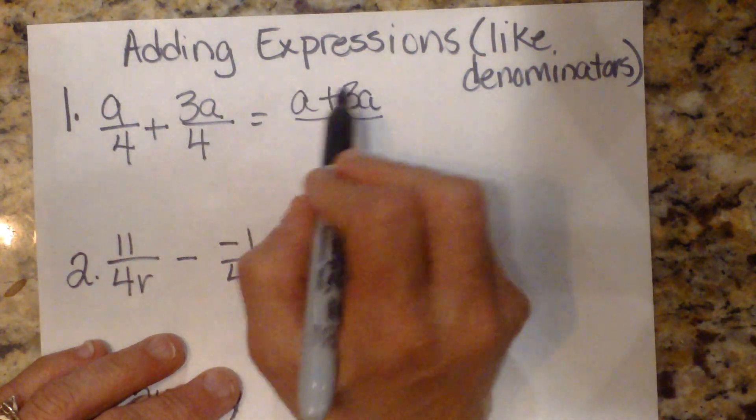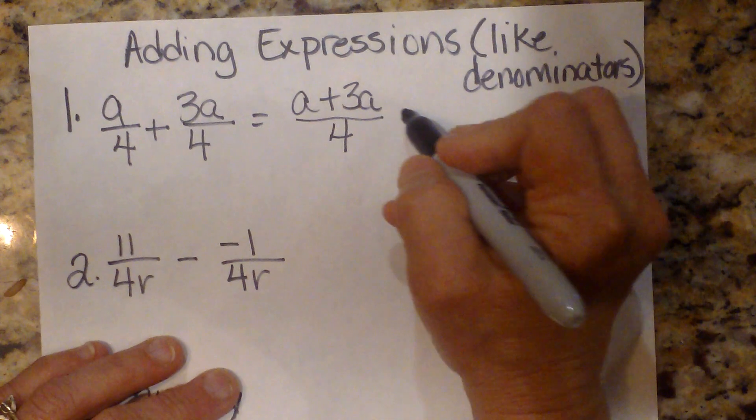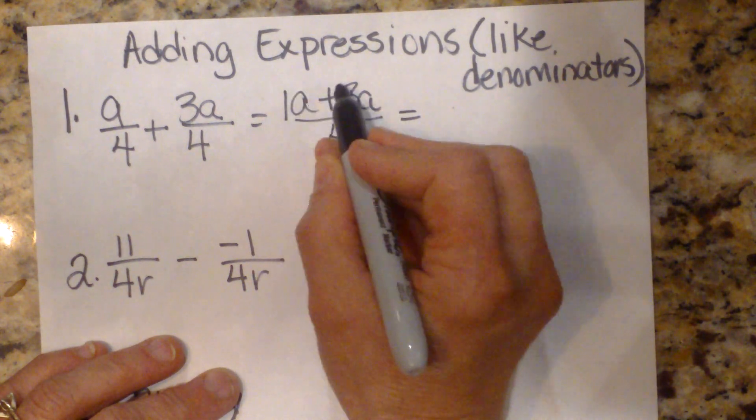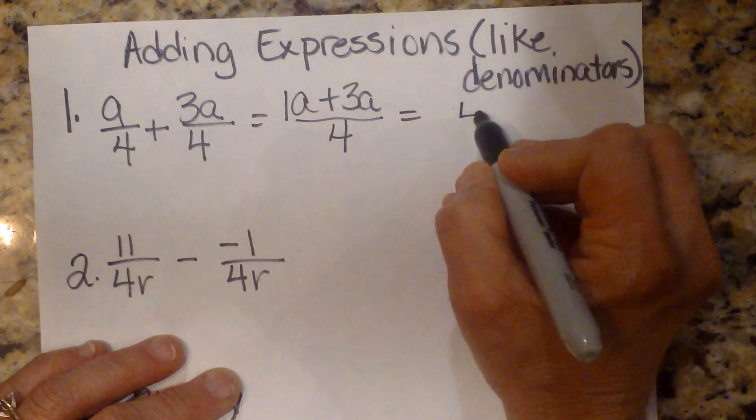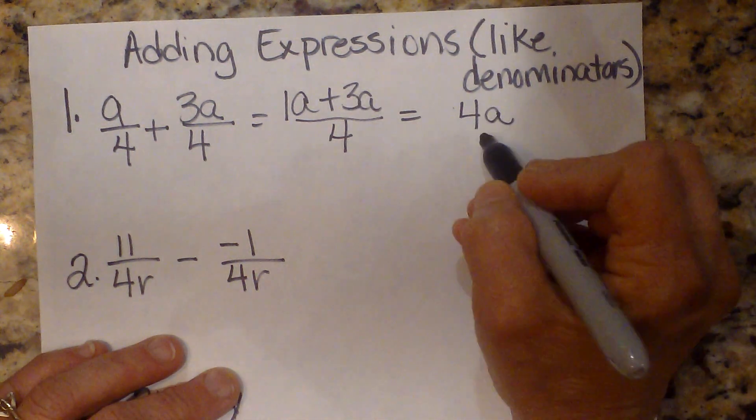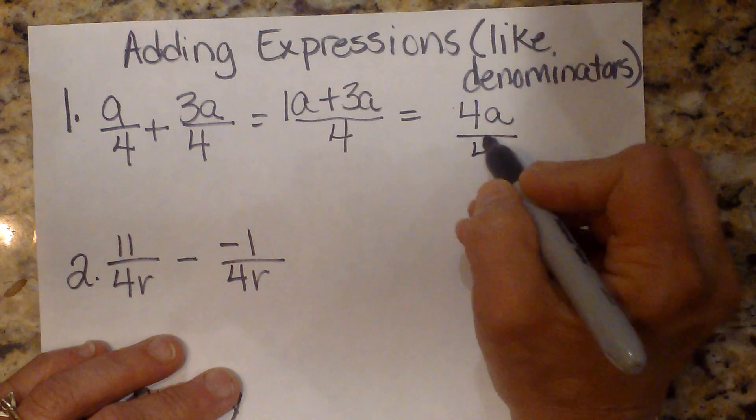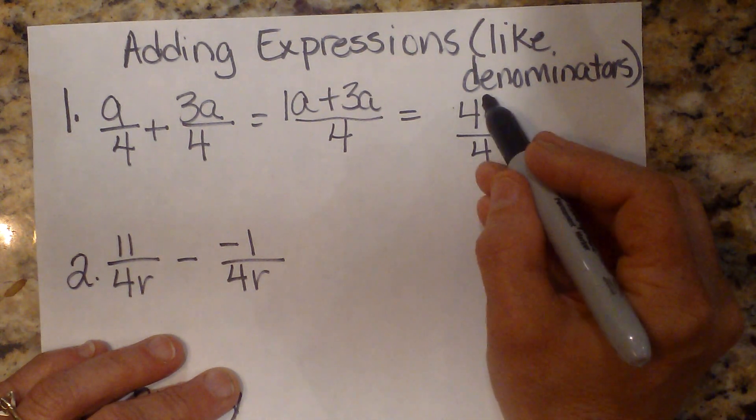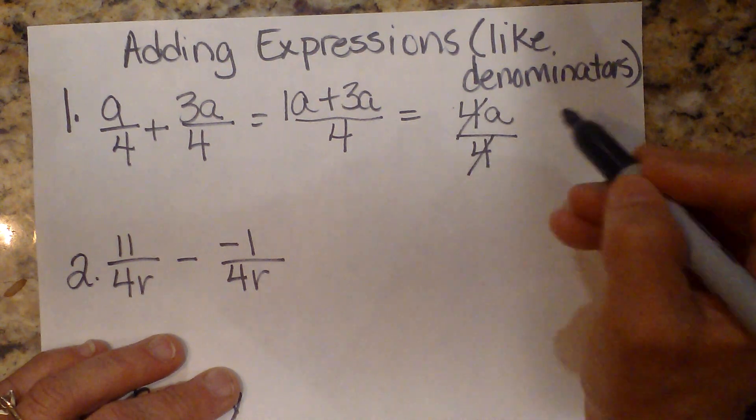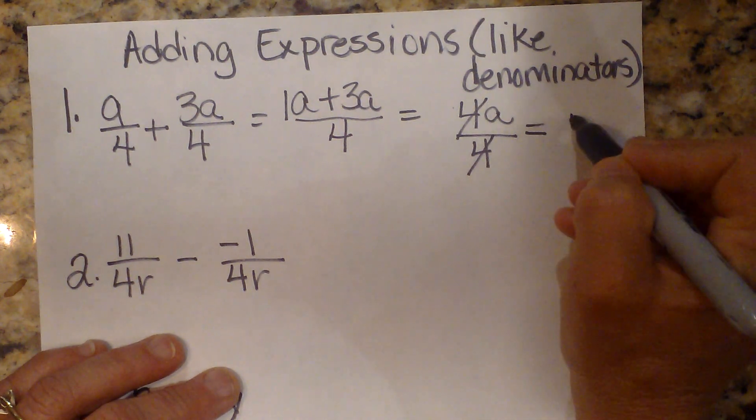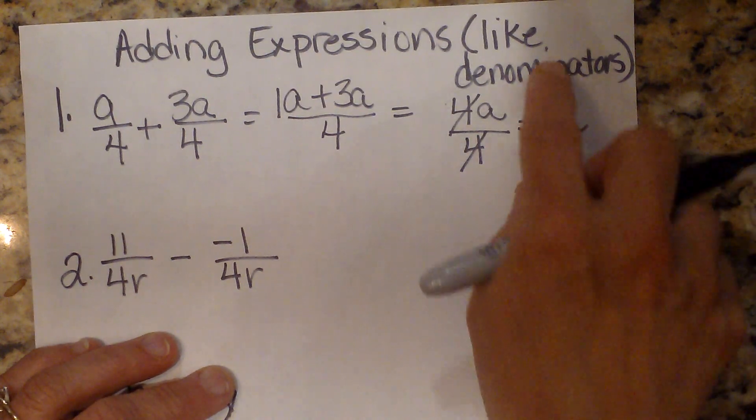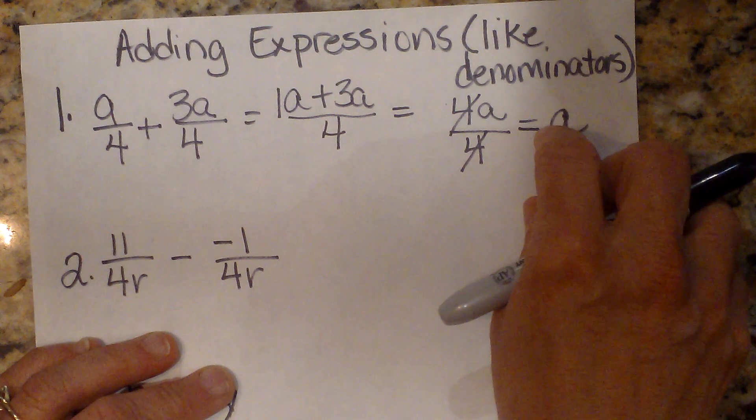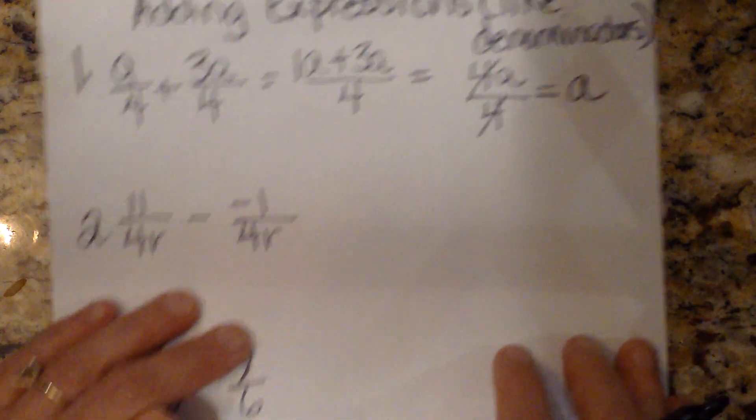Then what you do is you apply the operation to the numerator or to the top. So I'm going to take the a and add it to 3a. So this is going to simplify to, well, that's a 1a plus 3a. That simplifies to 4a over 4. Well, this answer will then simplify because 4 over 4 is just 1. So this simplifies just to a, or you could put a 1 in front of it for 1a, but when you have a coefficient of 1, it's just assumed to be there.